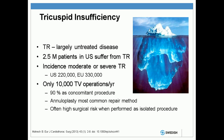Tricuspid insufficiency is really a largely untreated disease. If we look at the United States, there's over two and a half million patients that suffer from tricuspid insufficiency, with the incidence of moderate or severe TR in the U.S. being 220,000 and over 300,000 in the EU. Nevertheless, we only perform 10,000 operations for tricuspid insufficiency yearly in the United States, of which 90% are a concomitant procedure. That suggests only 1,000 operations are performed for isolated tricuspid insufficiency, which is a very small proportion of the patients with this disease process.